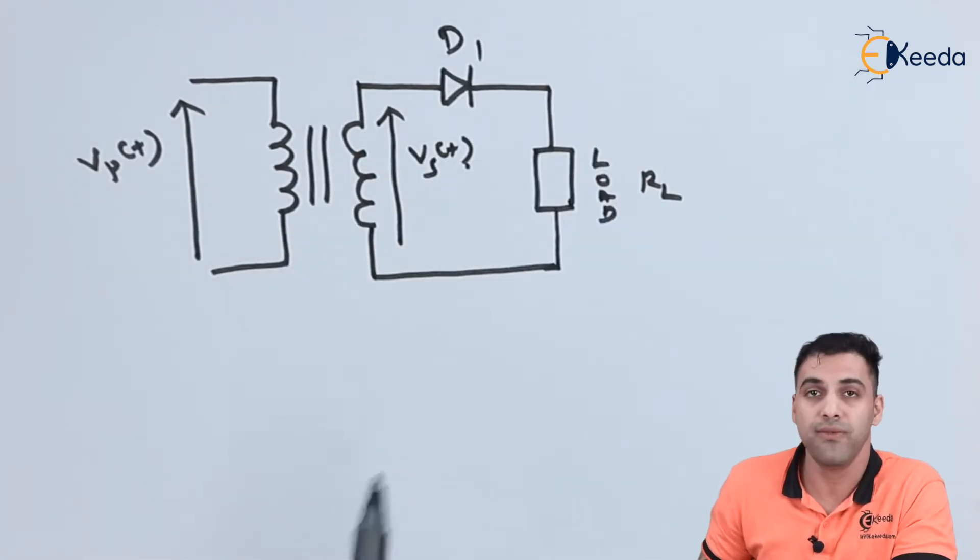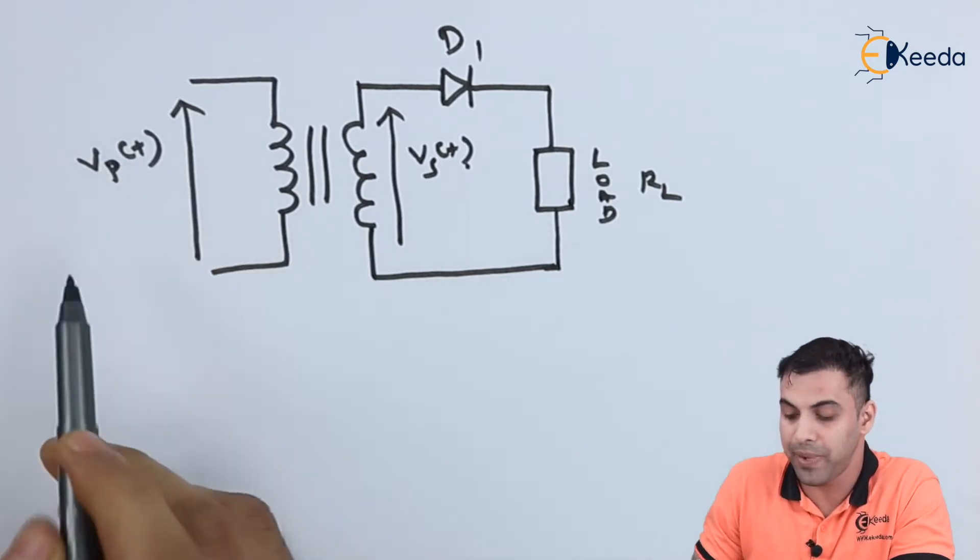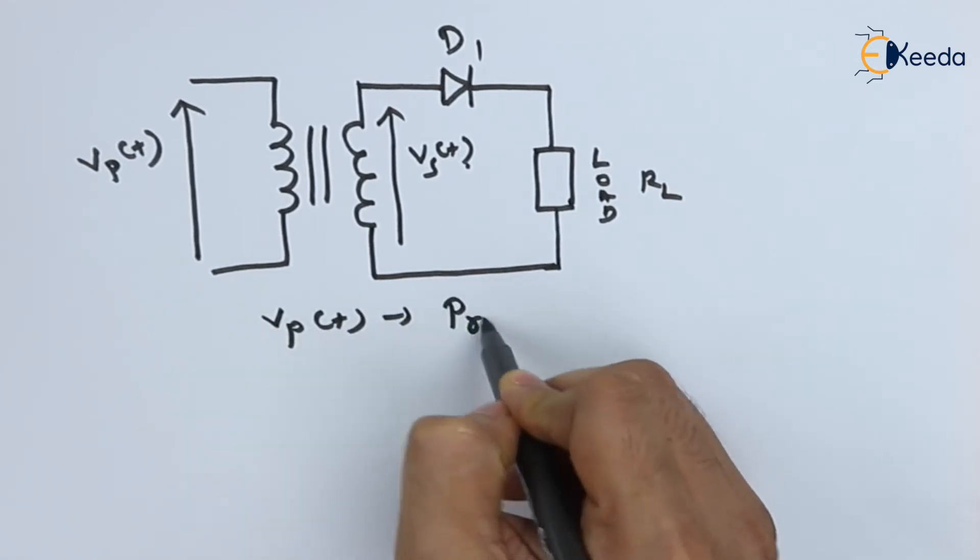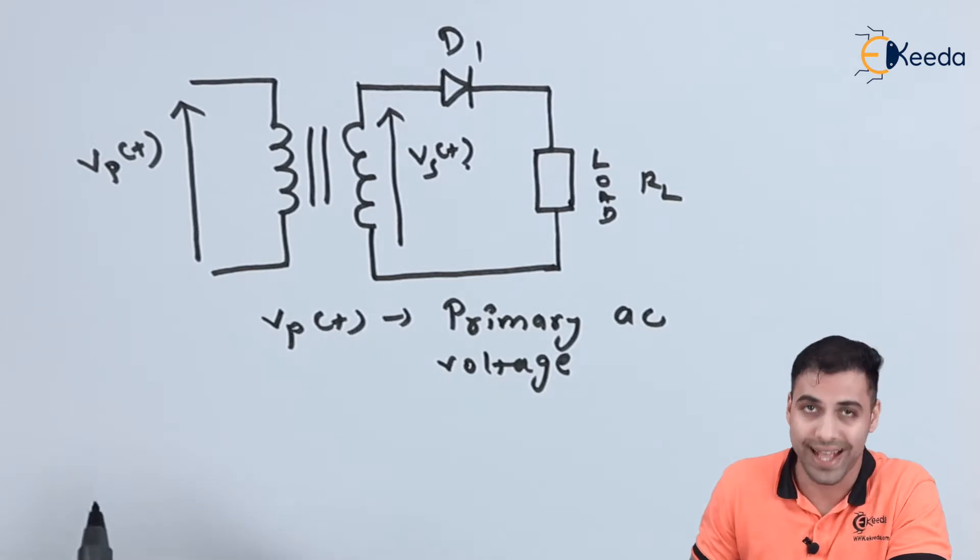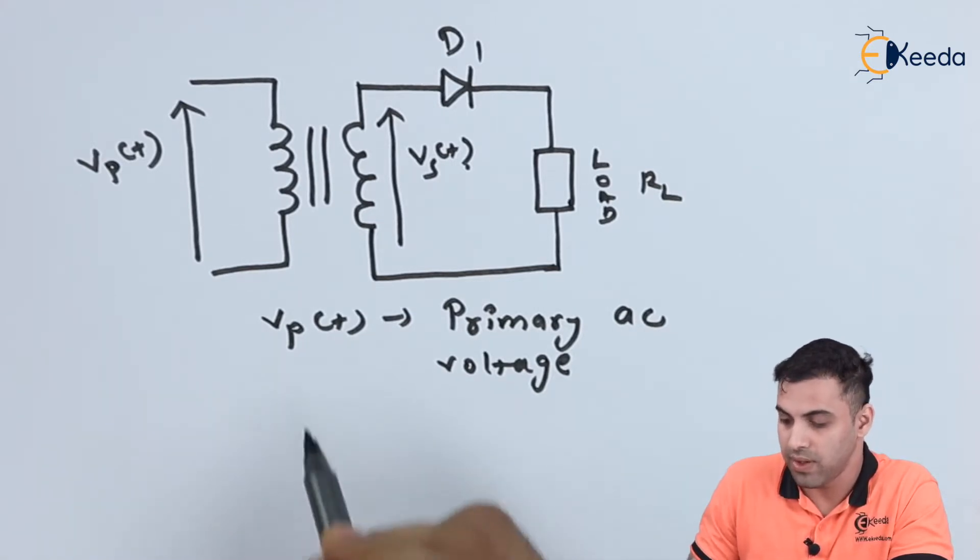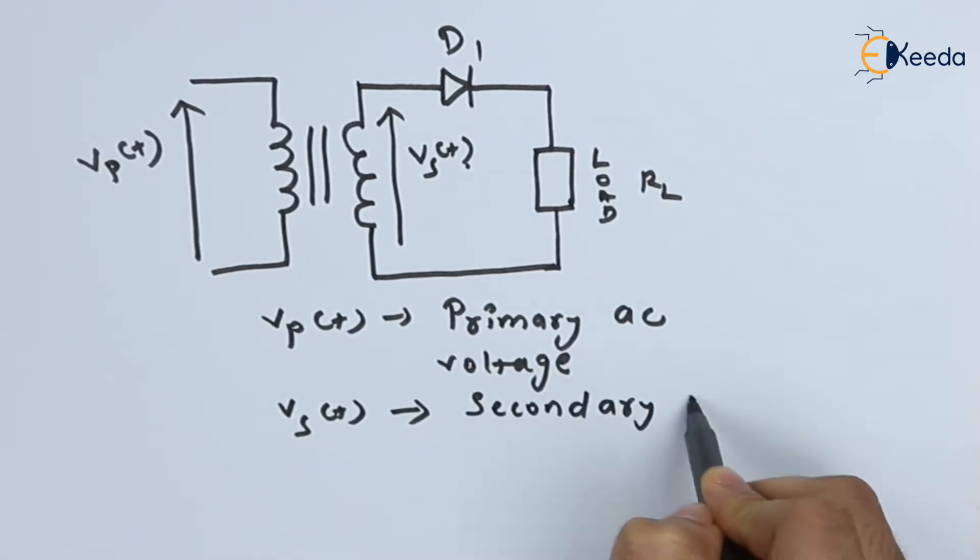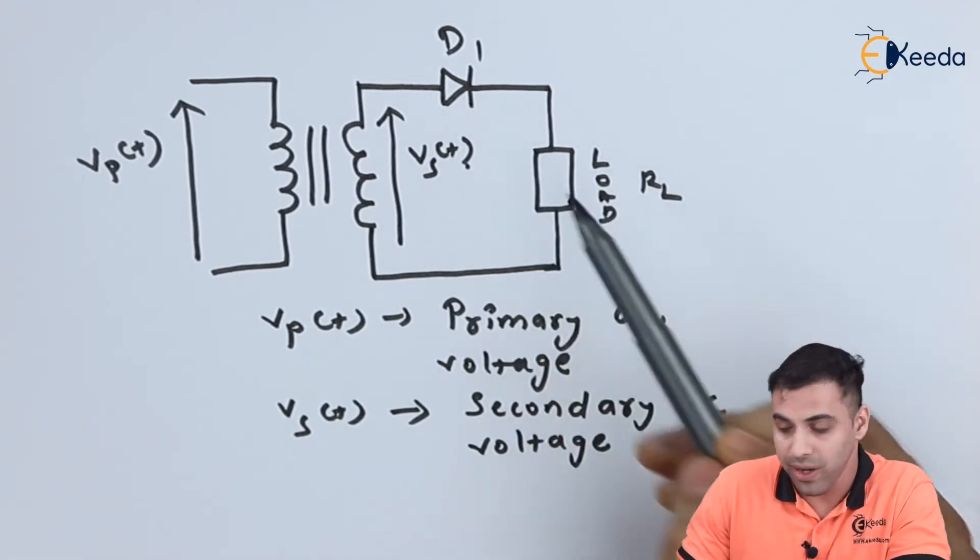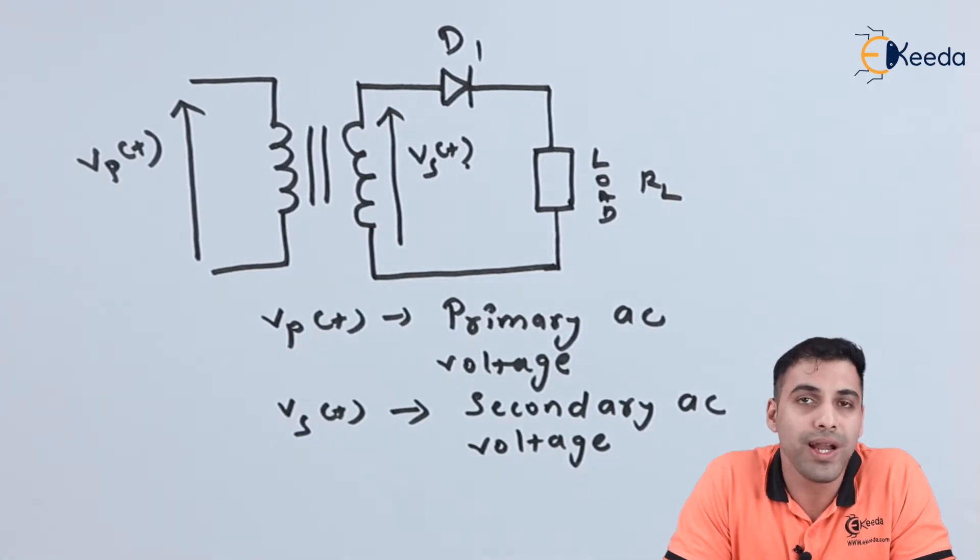If you can see this circuit diagram, here let Vp(t) be the primary voltage, the primary AC voltage. Vs(t) be the secondary AC voltage. Let D1 be the diode and RL be the resistance of the load.